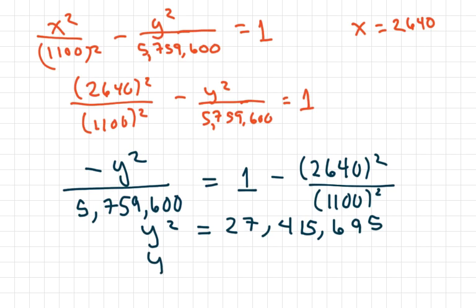You get Y squared equals 27,415,695. And you square root both sides, so Y equals 5,236 feet, which is approximately 0.99 miles due north. And that's all. Thank you and have a nice day. Bye-bye.